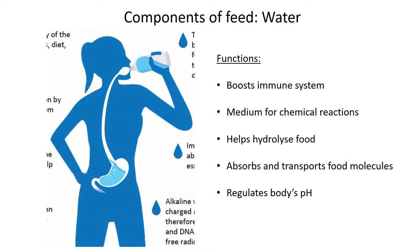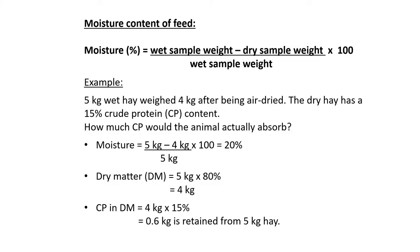Without water in the stomach, the body will struggle to digest food. Third, water helps to hydrolyze food — hydrolysis is essentially a fancy word for water being used to digest food. Water also helps absorb and transport food molecules throughout the body to the cells that need them. Lastly, water regulates the body's pH — for monogastric animals the stomach pH is around pH 2, and water plays an integral role in regulating that.